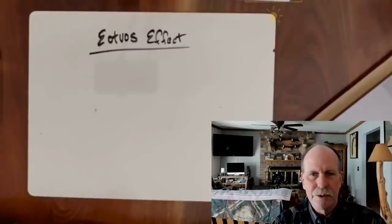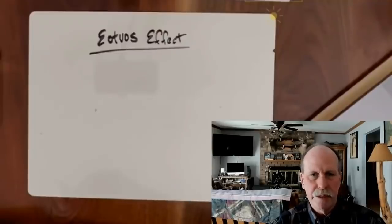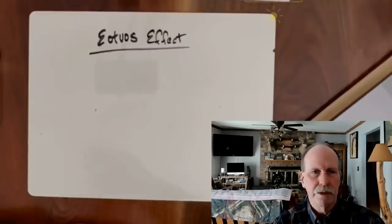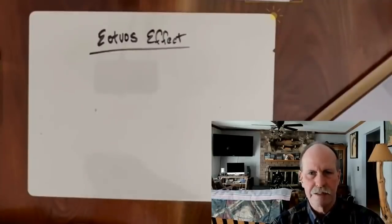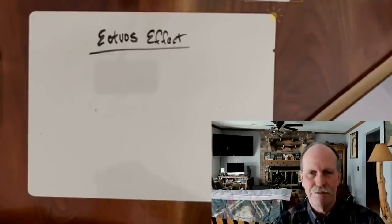Well, hi everyone and greetings from northern Michigan. This is Bob the Science Guy. I've got two special treats for you today. The first one is we're going to do a little science — we're going to learn about something called the Eötvös Effect. And the second is we're going to see the reaction of the science denial community to the Eötvös Effect. So let's cue up the music and get going.